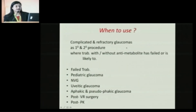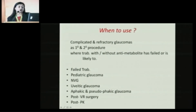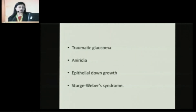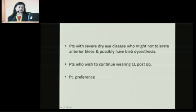When do you use any of these GDDs? Complicated and refractory glaucomas — either as primary surgery when you are almost sure that your trabeculectomy with or without an anti-metabolite is going to fail, or as a secondary procedure when trabeculectomy has already failed. These cases are mainly pediatric glaucoma, neovascular cases, uveitic glaucoma, aphakic and pseudophakic glaucomas, post-vitreoretinal surgery, post-penetrating keratoplasty, traumatic glaucomas, aniridia, epithelial downgrowth, and Sturge-Weber syndrome. They can also be attempted in patients with severe dry eye disease, patients who may have bleb dysesthesia, or those who wish to continue wearing contact lenses postoperatively.